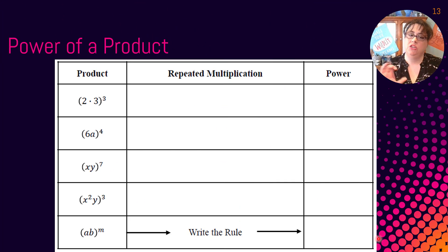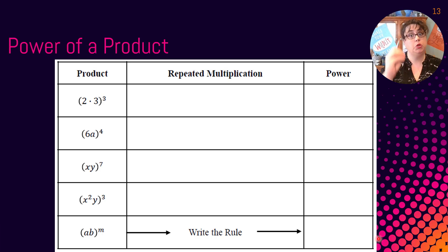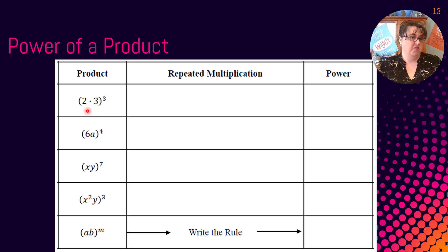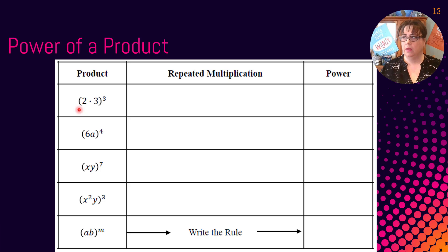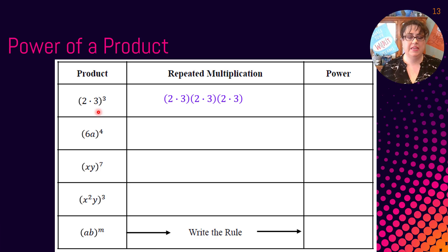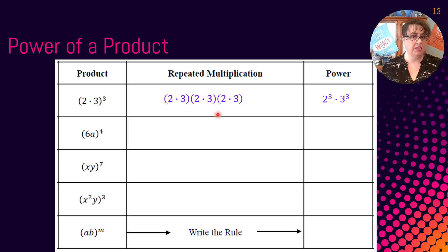So what happens if we change it just a bit, and instead of having just one base, what if there are two bases — a product in the parentheses? Well, it's almost like the distributive property but for exponents. What it's saying is everything inside is being raised to that power as well. So this is 2 times 3 times 2 times 3 times 2 times 3 — the entire thing is raised to the third power, giving us 2 to the third and 3 to the third.